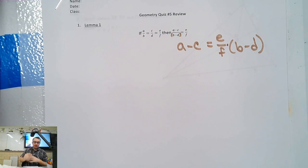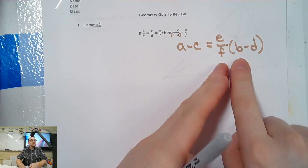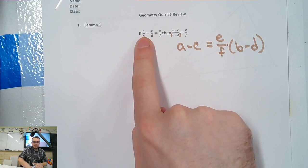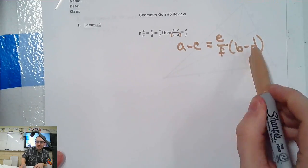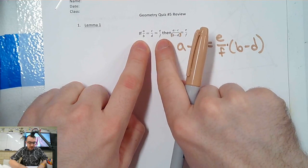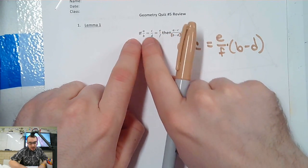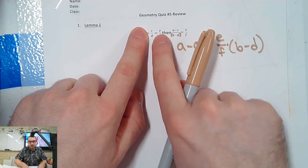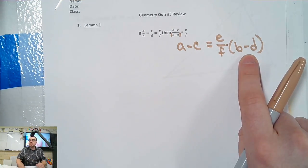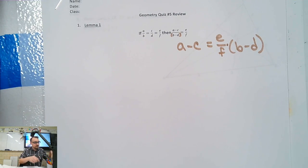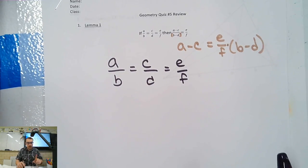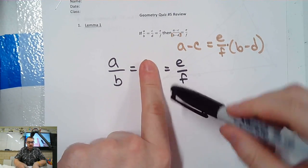So my goal is a little more clear now. What I want to do is find out what A is and find out what C is, and then when I subtract them, this should appear somehow, because we know this is going to be true. I want A to equal something with E, F, B, and D. So I'm going to take the first and the third — A over B and E over F — and get them together. Because when I move that B over, I'll have A equals something with B, E, and F. That gets most of my letters. I'll do the same thing with C. When I move the D over, I'll have C equals something with D, E, and F. So I'm going to get A on its own and C on its own.